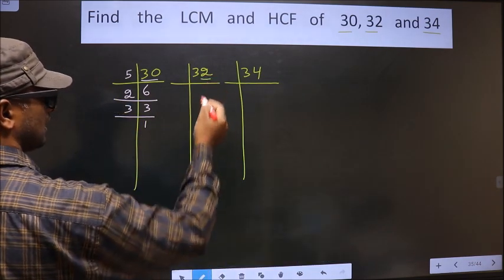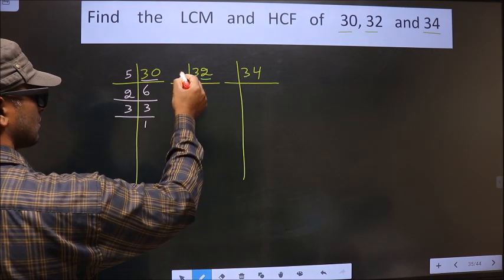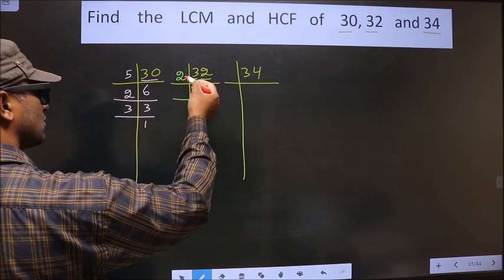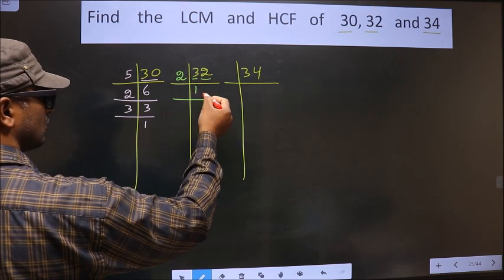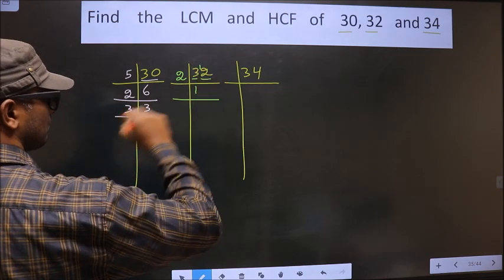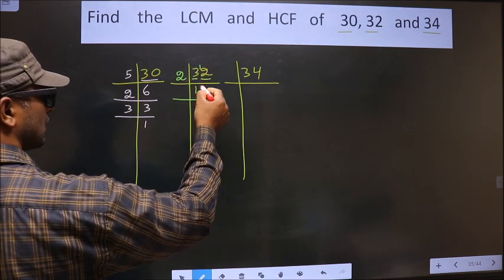Now for this number, last digit is 2, even. So we take 2 here. First number is 3. A number close to 3 in 2 table is 2, 1, 2. 3 minus 2 is 1, carried forward making it 12. When do we get 12 in 2 table? 2, 6, 12.